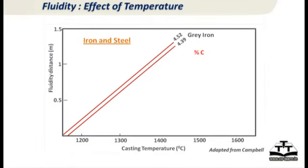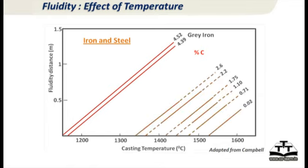From literature graphs on effect of temperature on fluidity — for grey iron, fluidity is very high, as high as more than 1 meter, especially high-carbon grey iron at around 4.5% carbon, which has very high fluidity but obviously low strength. Steels have much lower fluidity than grey iron — typically between 0.5 to 0.8 meters. Thumb values to remember: fluidity of iron is about 1 meter; steel is about 0.6 meters. These values decide how many gates you need to put.